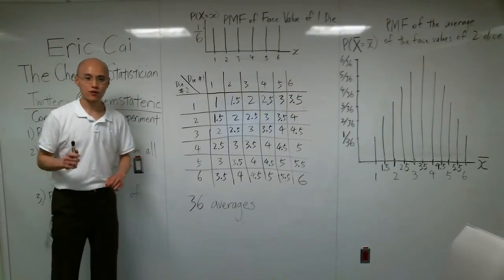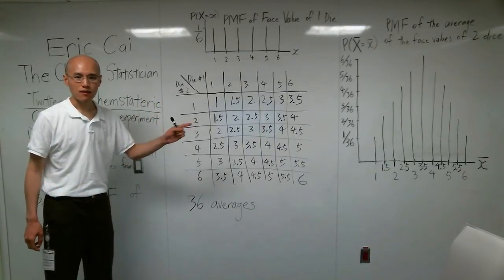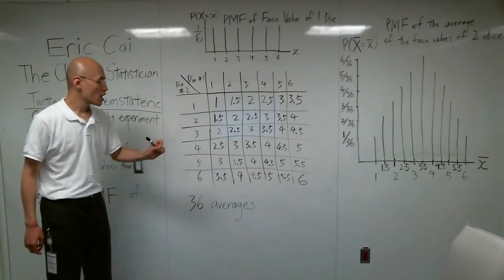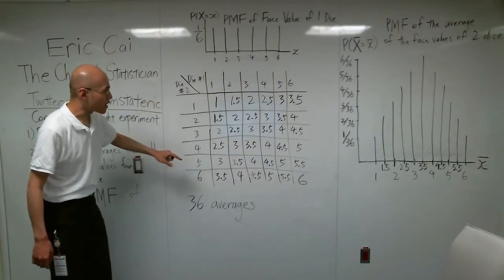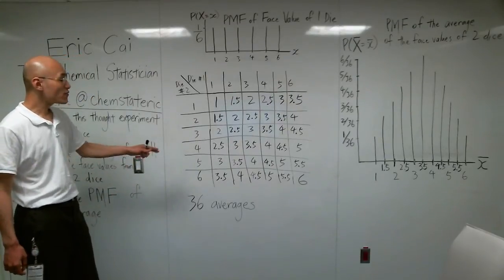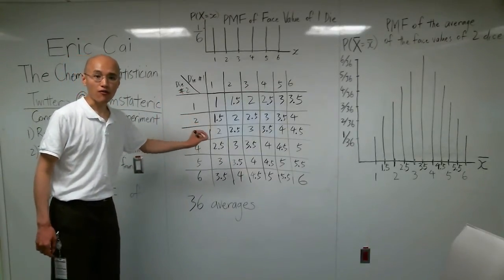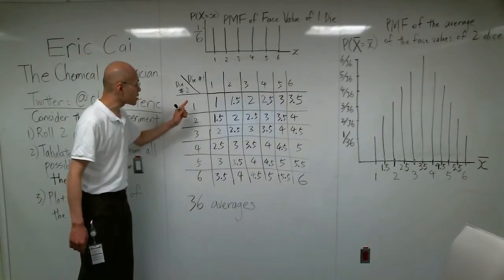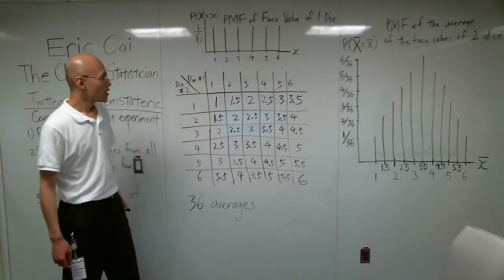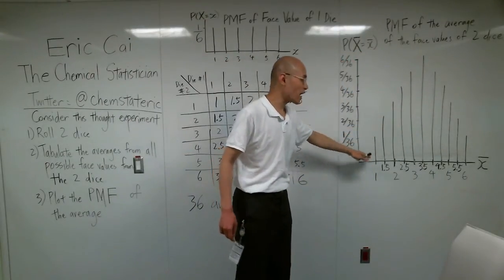Here's the key lesson that I want you to take away from this video. The reason why that sample mean has a normal looking distribution in that plot is because there are more ways for the average to take on a middle value than an extreme value. Specifically, the middle value is 3.5. And there are 6 ways for the face values to combine and give an average of 3.5. And yet there's only 1 way for the 2 face values to combine to give an average of 1. So that is why the proportion of the middle values is high and the proportion of the extreme values is low.